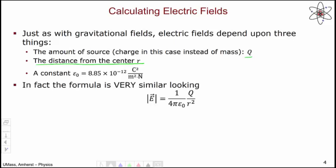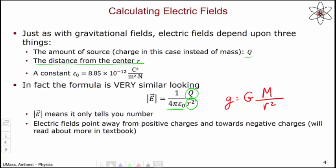In fact, when you go to write the formula, it's very similar to the formula for gravitational field. Gravitational field was some constant, mass over distance squared. Electrical field is some constant, charge over distance squared. I will ask you to use this particular equation. You'll notice that we have the electric field vector inside of absolute value bars, indicating that this formula only tells you the magnitude. It doesn't tell you the direction. As for the direction, electric fields point away from positive charges and towards negative charges.